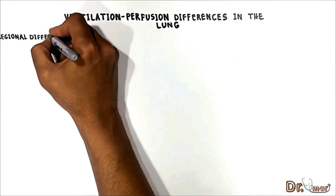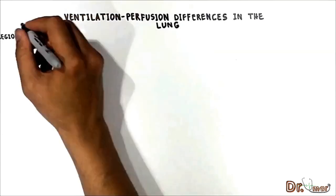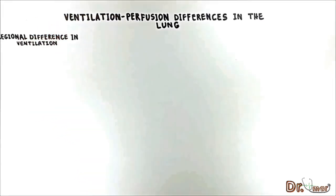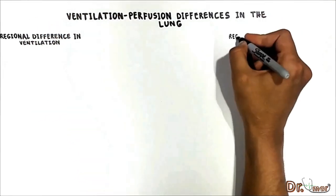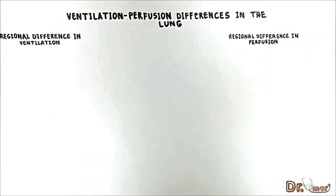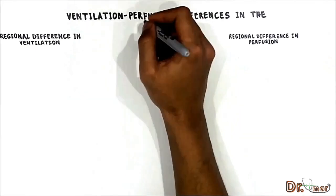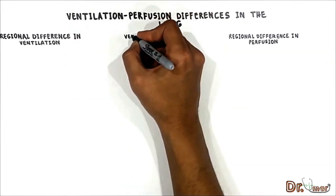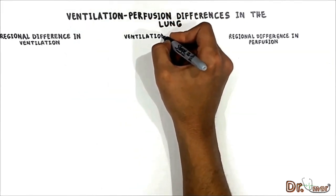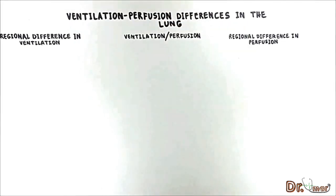In this video we will talk about regional differences in ventilation and regional differences in blood flow. This means different lung regions have different ventilation and different blood flow perfusion. Then we will see how they match each other by looking at the ventilation-perfusion ratio.